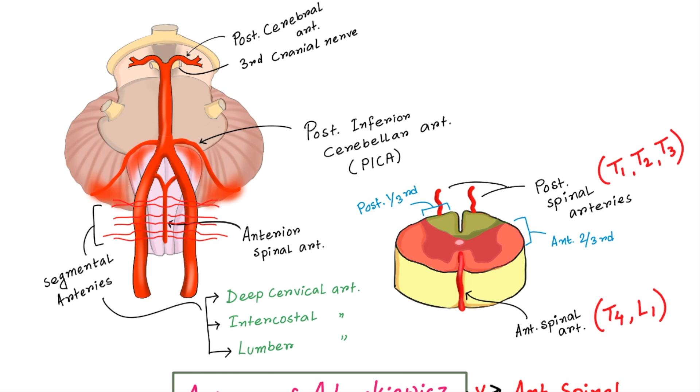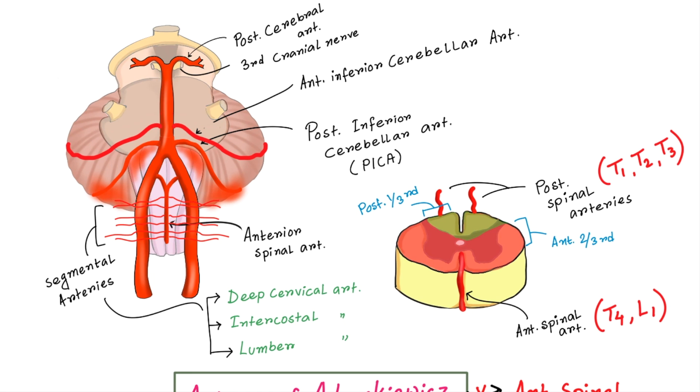Next branch comes out is anterior inferior cerebellar artery. Its origin varies person to person. In some cases, it comes out of the vertebral artery and in other cases from basilar artery. It supplies the anterior inferior surface of the cerebellum and lateral surface of pons.